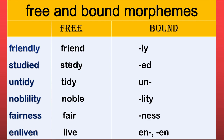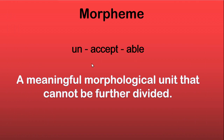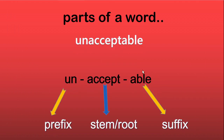In the word 'unacceptable,' 'accept' would be the free morpheme, and un- and -able would be bound morphemes. Look at another example: 'friendly.' 'Friend' is free, and -ly is bound, because 'friend' can stand independently, while L-Y is not free — it is always bound to something else. Therefore we call it a bound morpheme. Un- and -able are bound morphemes because they cannot stand independently and would not have any particular meaning on their own. 'Accept' is the free morpheme.